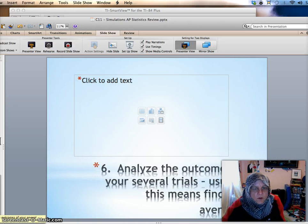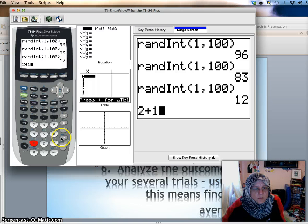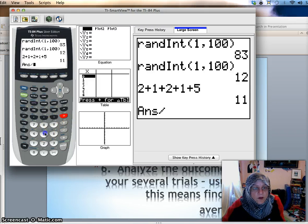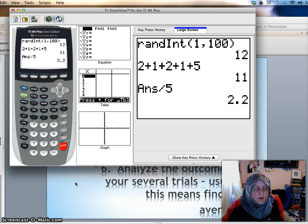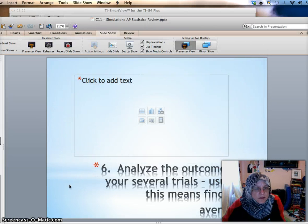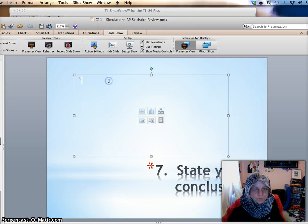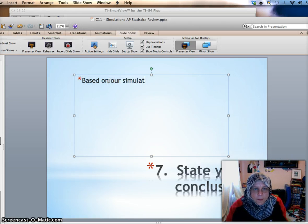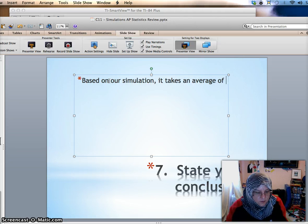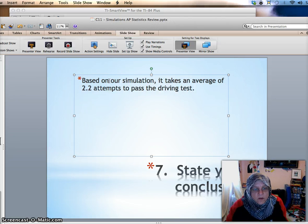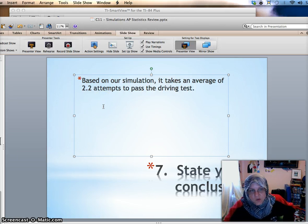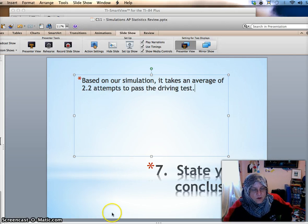Okay, so we had two, one, two, one, five as our outcomes. That was about five trials. And then we would want to analyze the outcomes of your several trials, so we might want to find the average. So two plus one plus two plus one plus five divided by one, two, three, four, five trials. So we got an average of 2.2 for how many times someone would have to take the test on average. And we can state our conclusion. Based on our simulation, it takes an average of 2.2 attempts to pass the driving test. And so someone might want to store enough money to take it three times if they're going to be average, because it can't really take it 0.2 of a time. And so that concludes our review of chapter 11.